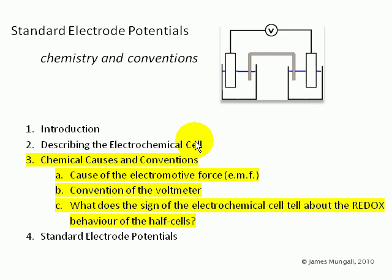Hello, I'm James. Hopefully you've been watching the previous two clips in this series. We're now up to chemical causes and conventions, which are going to look at the cause of the electromotive force, the convention of the voltmeter, and ask what does the sign of the electrochemical cell tell about the redox behavior of the half cells?